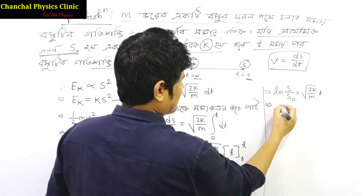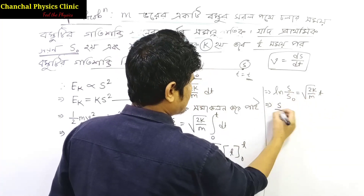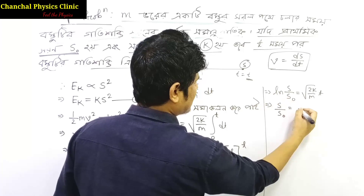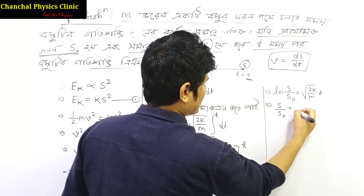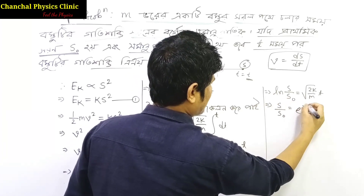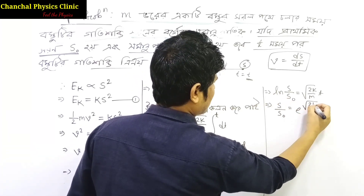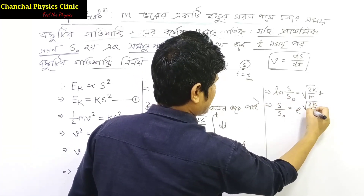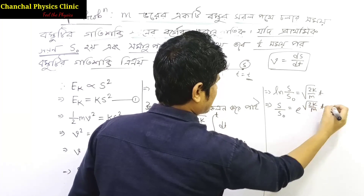If we look at this, we will see that s/s0 equals e to the power of √(2k/m) · t.